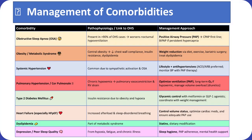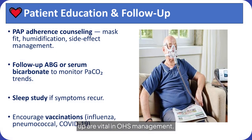Managing comorbidities in OHS involves addressing overlapping cardiometabolic and respiratory disorders. OSA is treated with positive airway pressure therapy, while obesity and metabolic syndrome require weight reduction through diet, exercise, or bariatric surgery. Systemic hypertension is managed with lifestyle modification and antihypertensive therapy, preferably ACE inhibitors or ARBs. Pulmonary hypertension and cor pulmonale are treated by optimizing ventilation, using long-term oxygen therapy if hypoxemic, and controlling volume overload with diuretics. Type 2 diabetes management centers on glycemic control with metformin or GLP-1 agonists, and heart failure care involves maintaining euvolemia, optimizing cardiac medications, and ensuring adherence to PAP therapy.